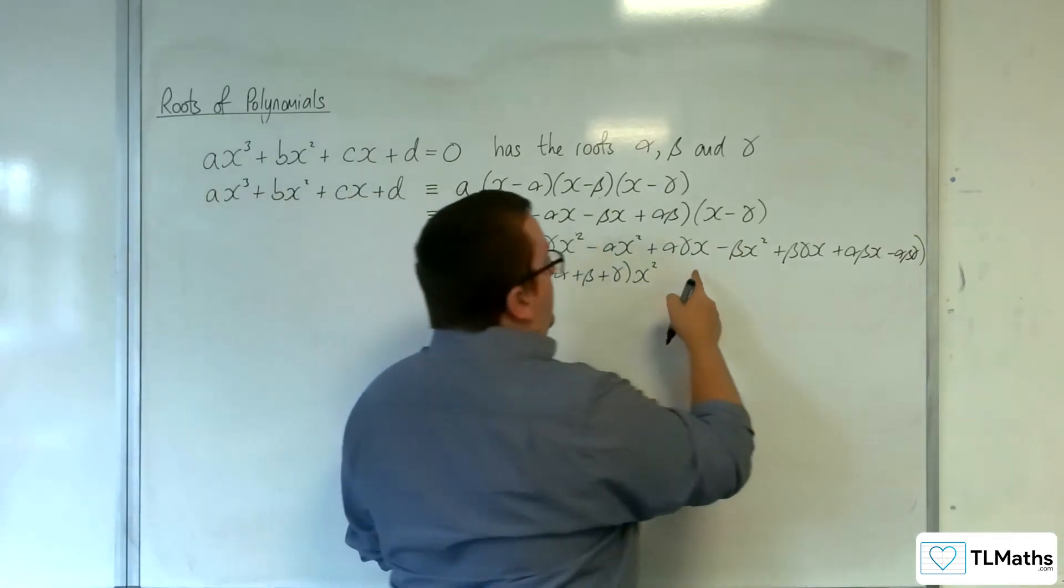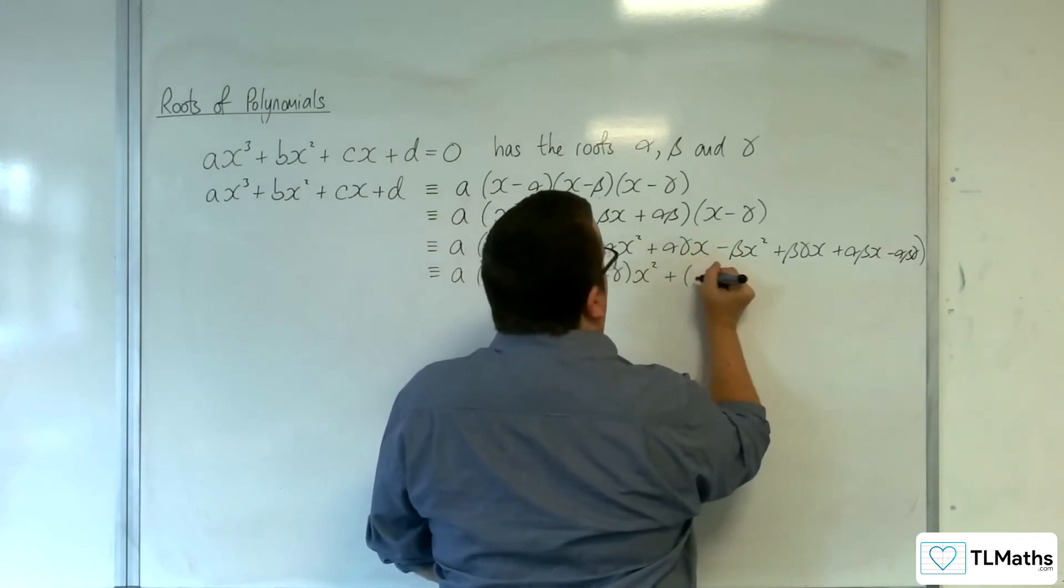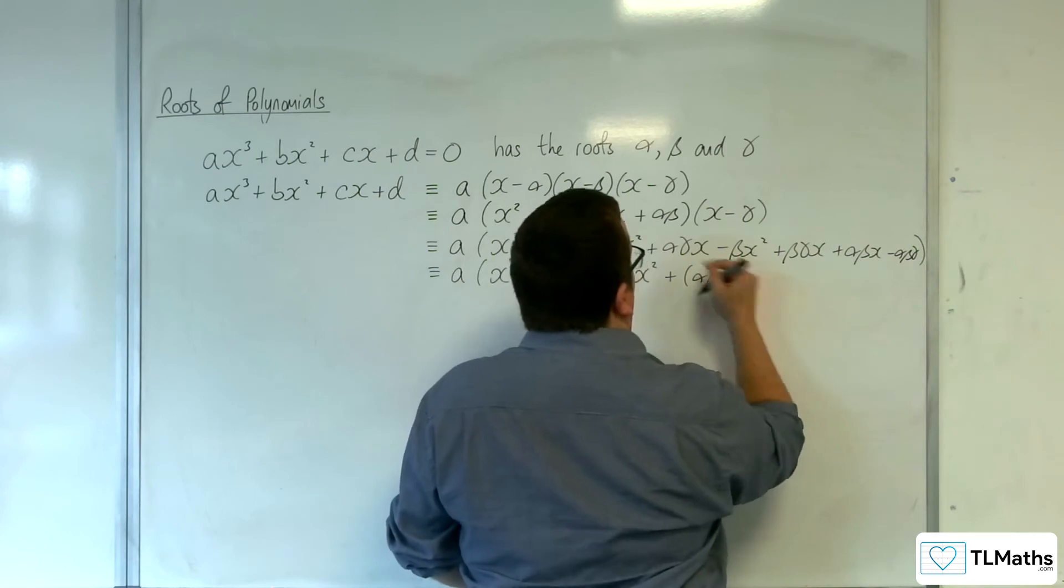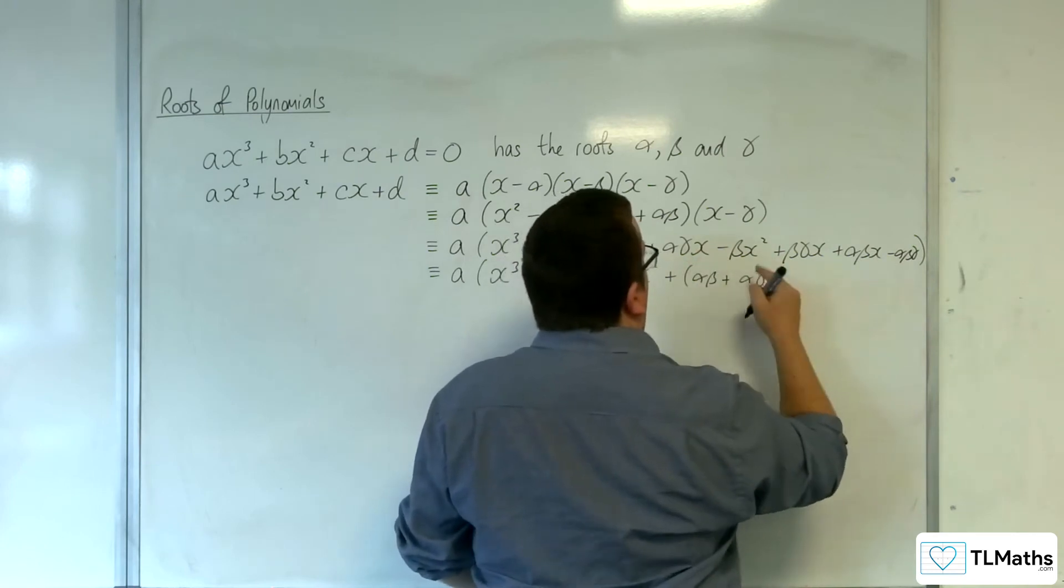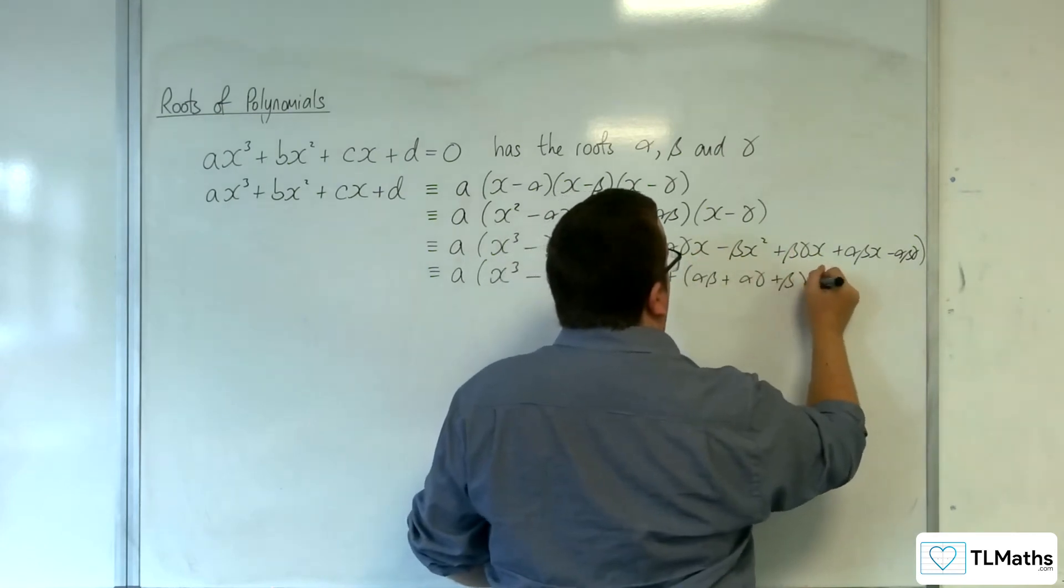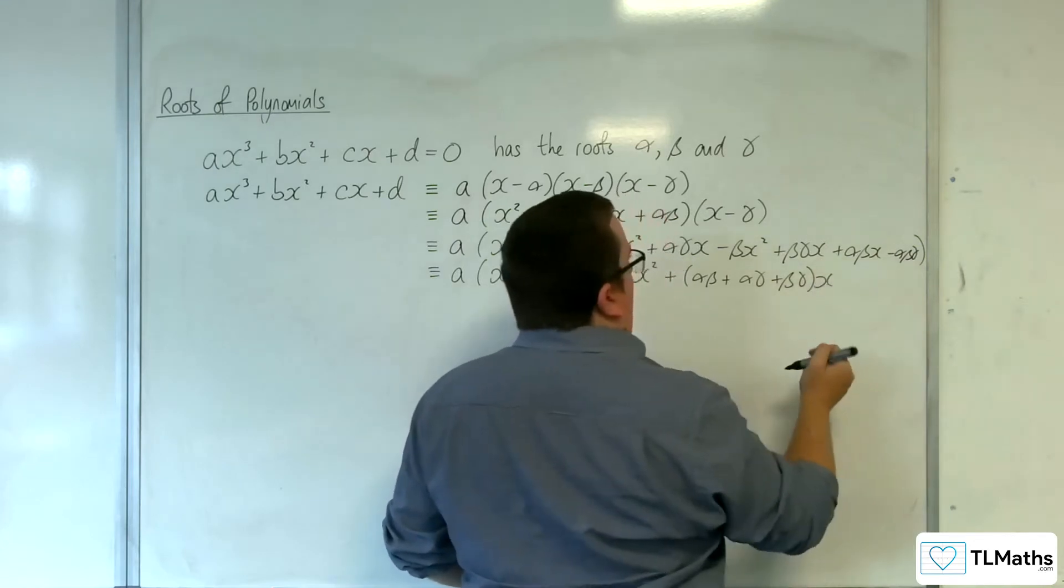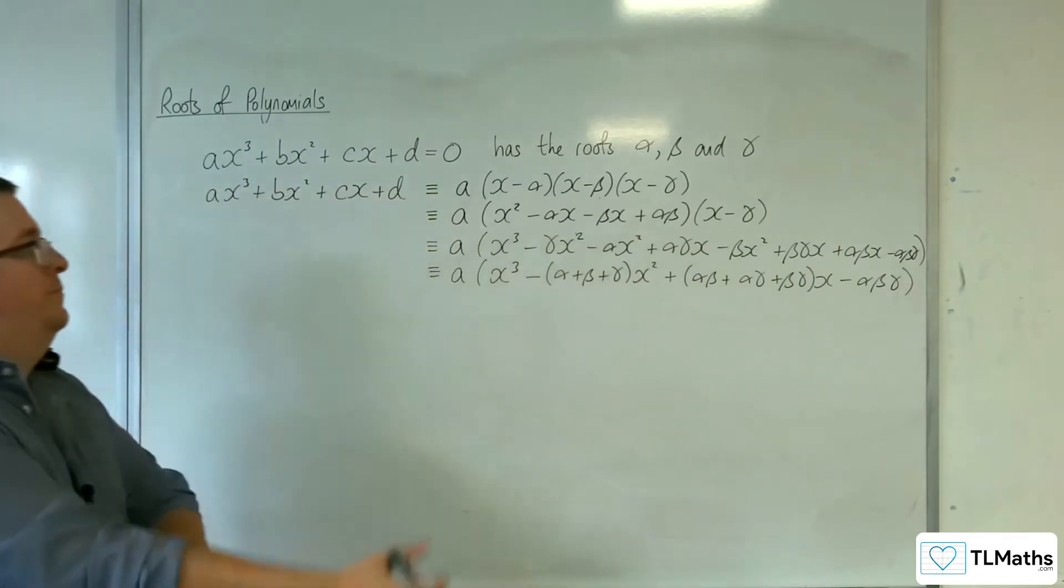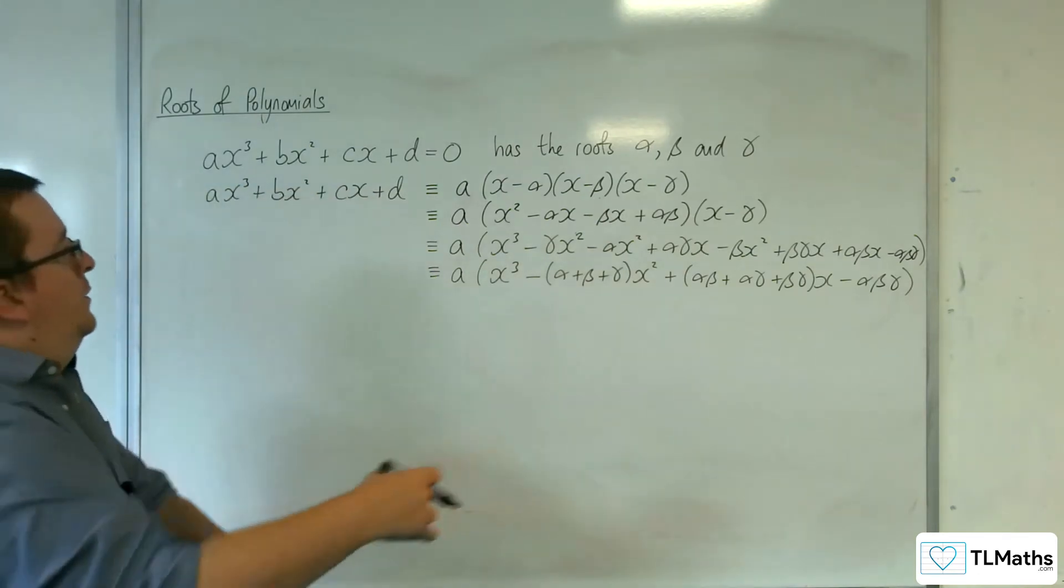Then I can deal with the x's. So I've got αβ, αγ, and βγ. And then finally, -αβγ.